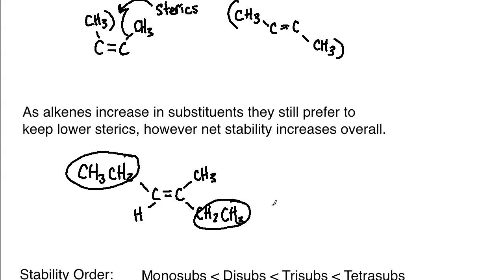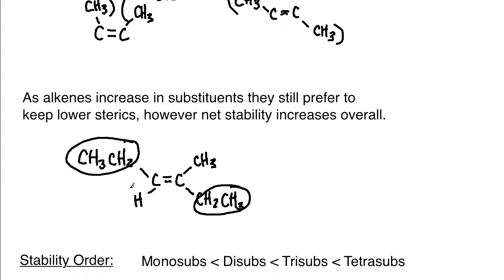One important side note: when you have more than two substituents, the naming drops cis and trans and uses E and Z as the naming format. Z is equivalent to the two larger groups being on the same side, or cis, and E is equivalent to trans, or the opposite sides. It is important to realize that E and Z are just naming techniques — they do not necessarily correlate to the cis and trans stability factors. They're just for naming purposes.